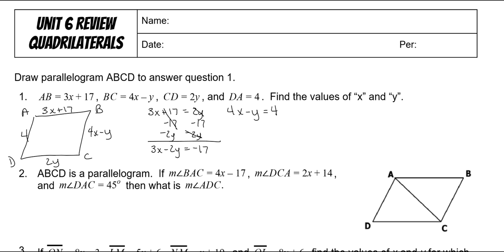Now our equations look alike. I'm going to take this one and multiply it times negative 2, so my Ys will cancel out. We'll end up with negative 8X plus 2Y is equal to negative 8. Now I'm going to put it underneath: 3X minus 2Y is equal to negative 17, and I will add them together. Negative 8X plus 3X is negative 5X. Negative 8 plus negative 17 is negative 25.